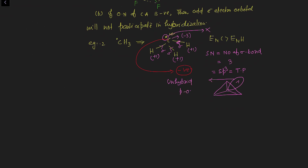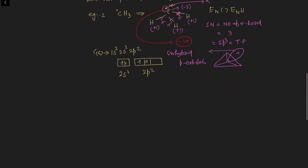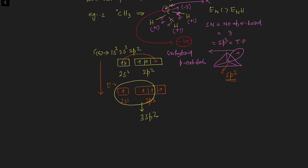How is this orbital an unhybridized p orbital? Let's understand using the electronic configuration of carbon. Carbon has atomic number 6, so its electronic configuration is 1s2, 2s2, 2p2 in the ground state. When carbon becomes excited, one electron jumps to the empty p orbital. The new configuration in the excited state is 2s1, 2p3. So the hybridization of carbon in the CH3 free radical is sp2: the s and two p orbitals undergo hybridization to form 3 sp2 hybrid orbitals, while this remaining p orbital is the unhybridized p orbital containing the odd electron.